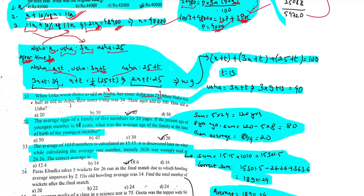From the conditions: 3x plus t equals 34 (Usha's age). Solving the system: equation one is 2x plus t equals 25; equation two is 3x plus t equals 34. Subtracting equation one from equation two gives x equals 9.